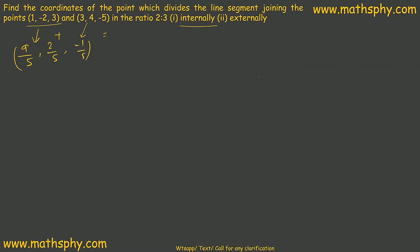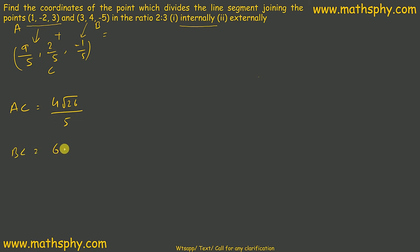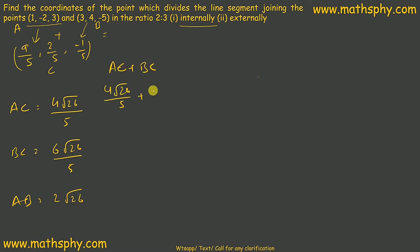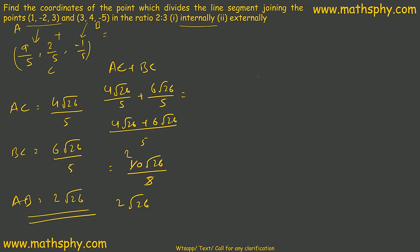Let's find the distance from A to C — AC comes out to be 4√26 / 5. BC comes out to be 6√26 / 5. And AB comes out to be 2√26. AC plus BC equals 4√26/5 + 6√26/5 = 10√26/5 = 2√26, which equals AB. This confirms internal division.